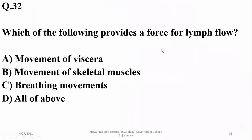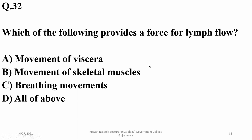Which of the following provides a force for lymph flow? Movement of visceral organs, movement of skeletal muscles, breathing movements, and semilunar valves all assist the flow of lymph in the lymphatic system, so delta — all of the above — is the right option.